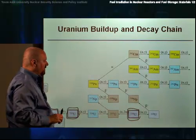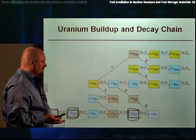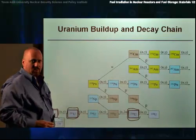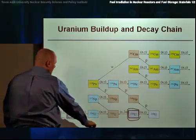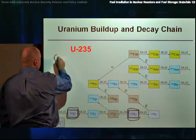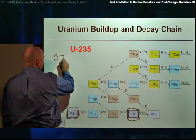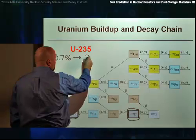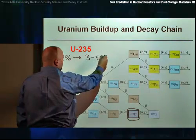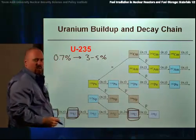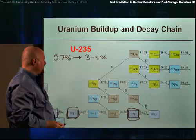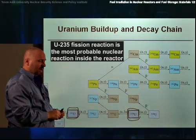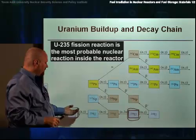Of those isotopes, when we want to use this in a nuclear reactor, we would like to enrich in the isotope U-235. Typically, power reactors would enrich the naturally occurring material from 0.7% to somewhere around 3% to 5% U-235. This U-235 is what would cause fissions inside of the reactor and give you power.